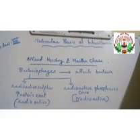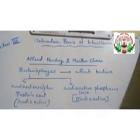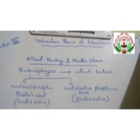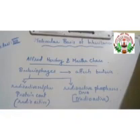DNA as the genetic material was confirmed without any doubt by the work of Alfred Hershey and Martha Chase. Their experiment was conducted on bacteriophages — viruses that infect bacteria. Viruses do not have a cell; they have a protein coat and genetic material, which can be RNA or DNA. The bacteriophages used here have DNA as their genetic material.